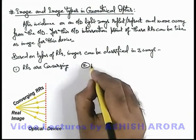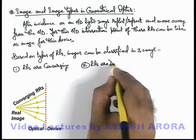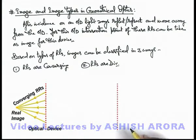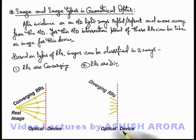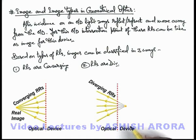The second category is when the RRs are diverging. If reflected rays from the optical device are going away in a diverging manner, they can never really meet in front of the device. However, these rays appear to be coming from a point behind the optical device, so that point is taken as the intersection point of all RRs. Since it is not a real point from which the rays are actually originating, we define it as a virtual image.